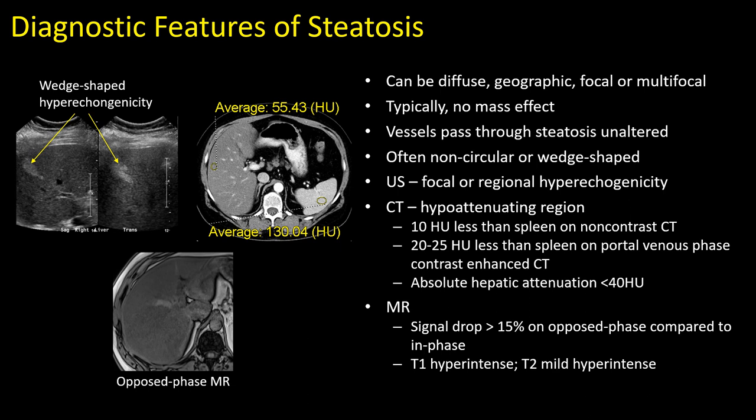One pitfall is you do not want to compare the spleen to the liver on the arterial phase, because the spleen will be much more hyperdense or hyperenhancing relative to the liver in that phase. On MRI, we compare in-phase and opposed-phase imaging, measuring signal intensities with ROIs in the liver and spleen. A signal drop of greater than 15% is within the range of steatosis. The liver will also be mildly T1 and T2 hyperintense on non-fat-saturated imaging and may show hypointensity on fat-saturated imaging.